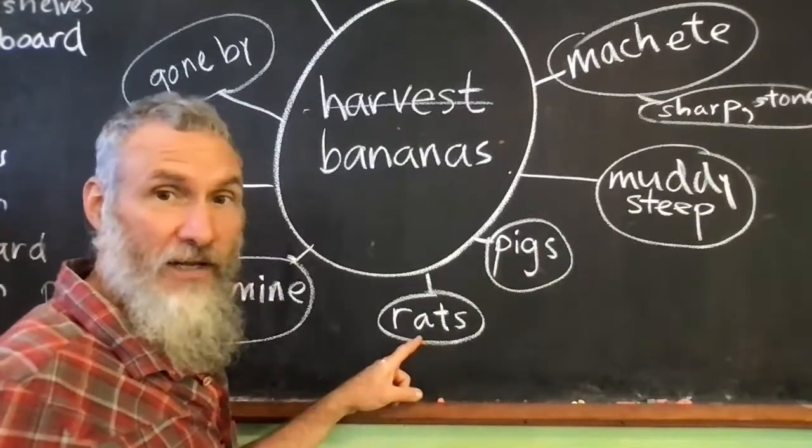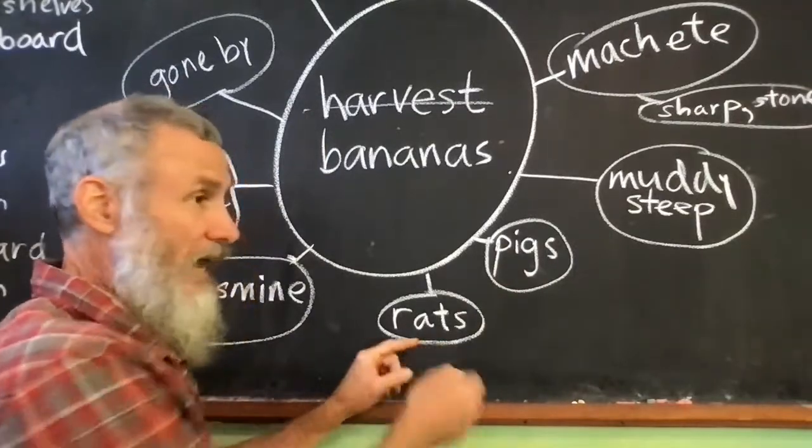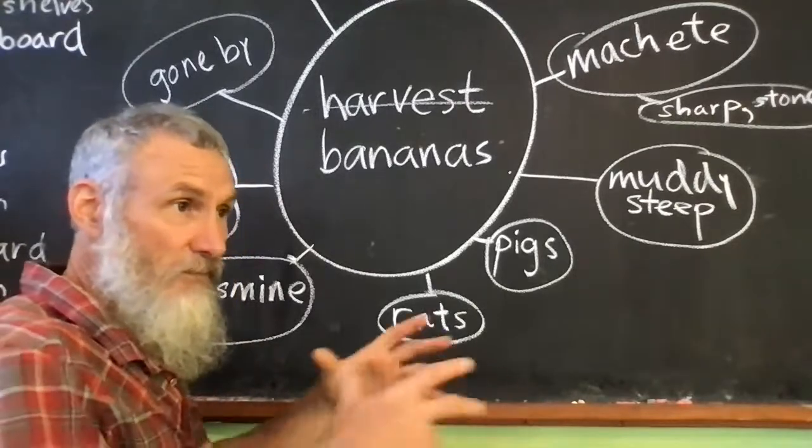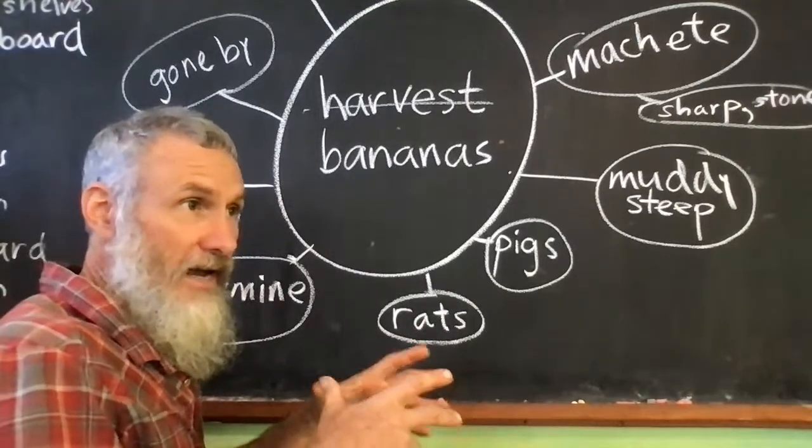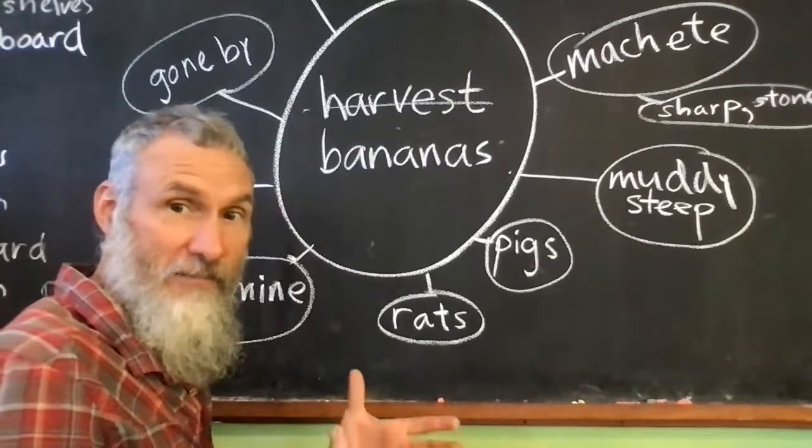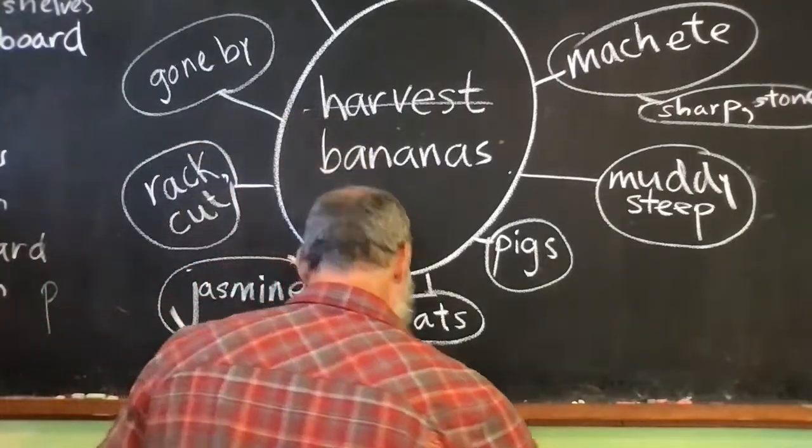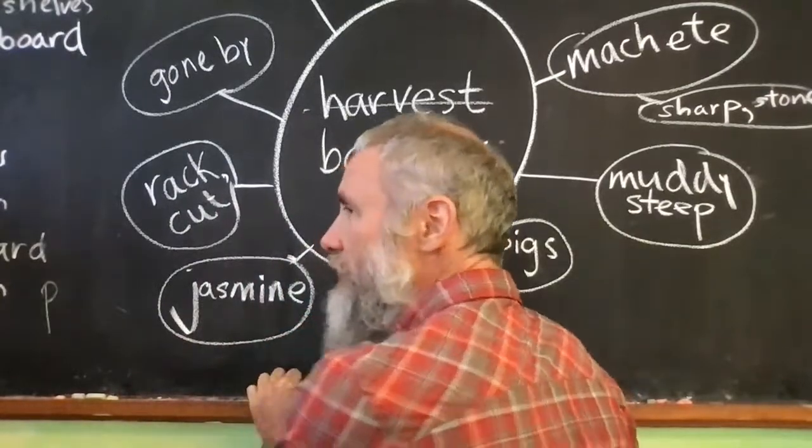I might say something about the rats falling. Here's a new sentence. I like to shake the banana plant before I harvest it in case a rat falls on my head. It's kind of funny, right? And then, you know, that's almost enough already. I've got a bunch of sentences already.